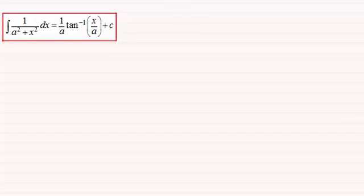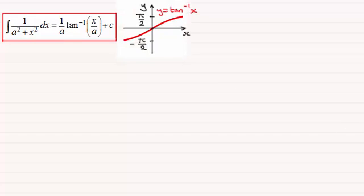Let's just have a look at the graph of y equals the inverse tan of x. Notice that the values in the range lie between minus pi upon 2 and pi upon 2. You should be familiar with this graph — if not, do check out the video that runs through this.